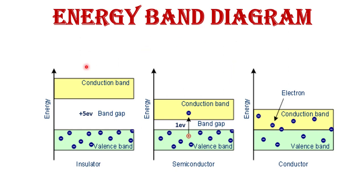Now with the help of energy band diagrams I will explain all three materials in detail. First, what is an energy band? When a number of atoms combine, the whole energy levels are divided into sub-energy levels and become overlapped, making a band which is called an energy band. The energy of the free electron is continuously changing in solids. There are three types of energy bands: filled band, valence band, and conduction band. The filled band, as clear from its name, is the band nearest to the nucleus and is completely full of electrons.